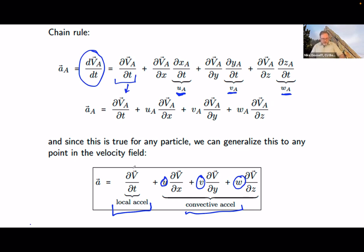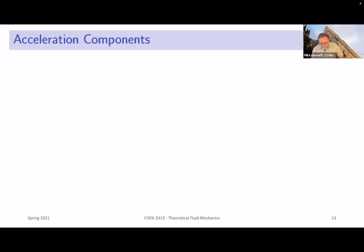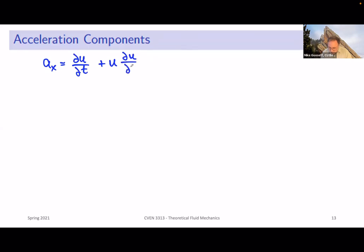Two components for acceleration — this is important. What we're going to do in another example problem is essentially work through a one-dimensional version of this to try to predict the convective acceleration. So first let's look at the acceleration components.